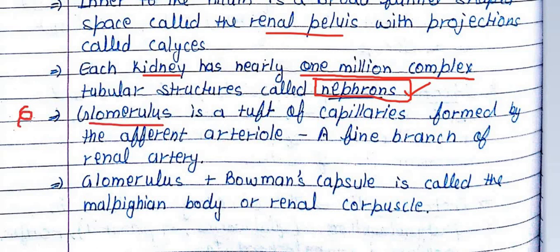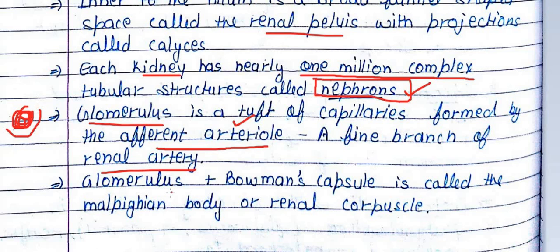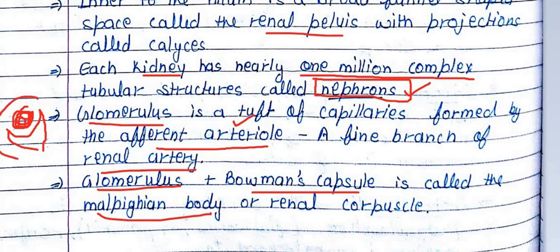The structures we call glomerulus are where blood vessels are accumulated. The vessel bringing blood in is the afferent arteriole — these are fine branches of the renal artery. The glomerulus together with the Bowman's capsule forms what is called the Malpighian body, which is the complete Malpighian body.